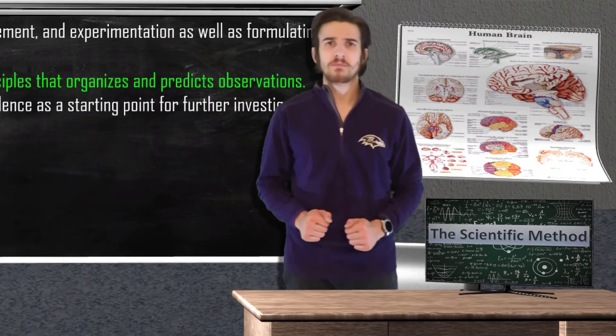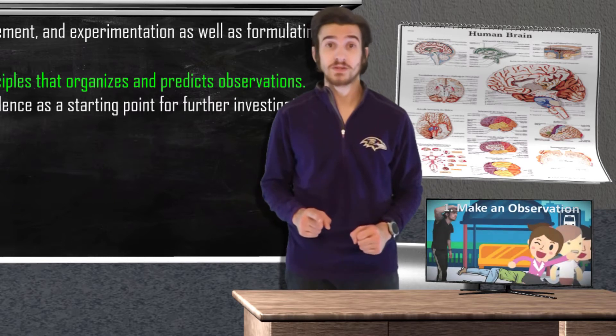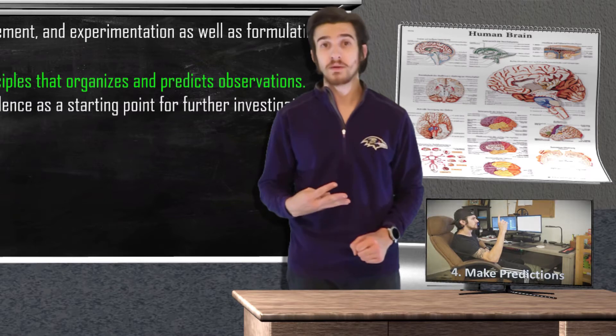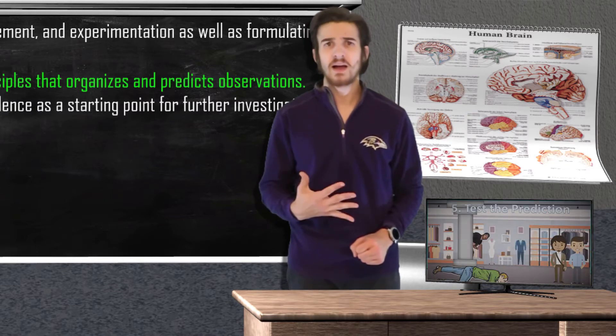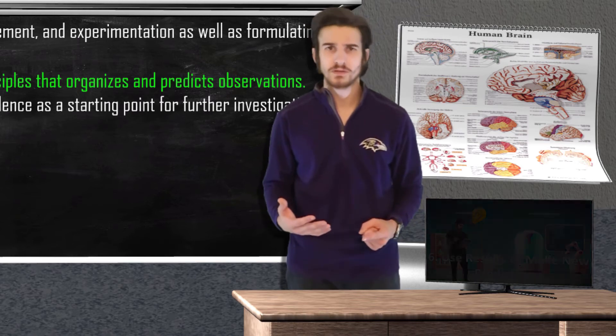We can easily break the scientific method down into a six-step process. One, make an observation. Two, ask a question. Three, formulate a hypothesis. Four, make a prediction based on that hypothesis. Five, test the prediction. And six, use the results to make a new hypothesis or new predictions.